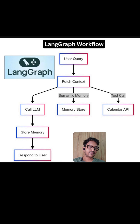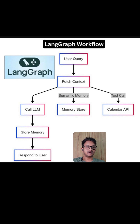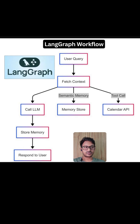Think of LangGraph as a state machine where you can have loops, conditionals, parallel execution, and human-in-the-loop patterns. LangGraph stands out as the most powerful open-source framework for building production-ready AI agents and orchestrating stateful, complex, and cyclic workflows.